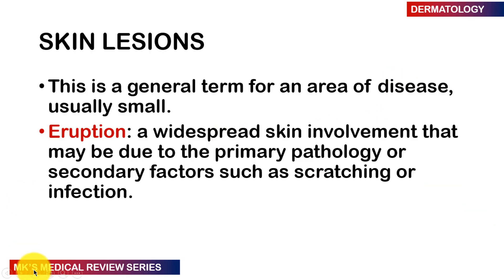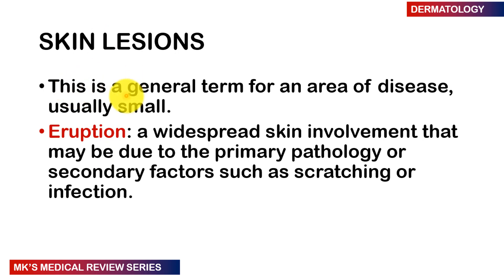Whenever you're talking about a skin lesion, you're referring to an area of disease — usually a small area that's affected. If it's a larger, widespread area, whether due to a primary pathology or a secondary factor modifying the presentation — such as scratching or infections — then you refer to that as an eruption or a rash. Note the difference: a rash usually tends to be widespread.